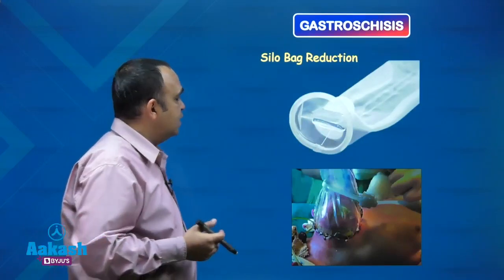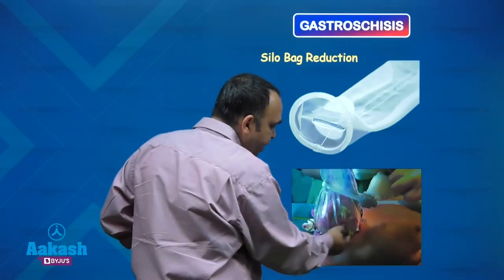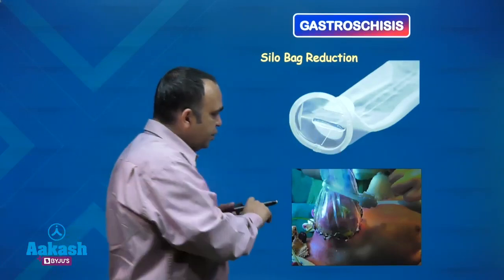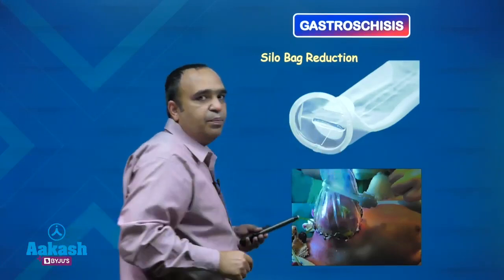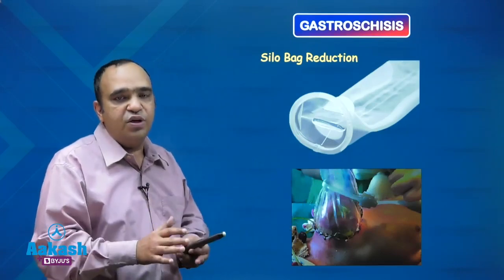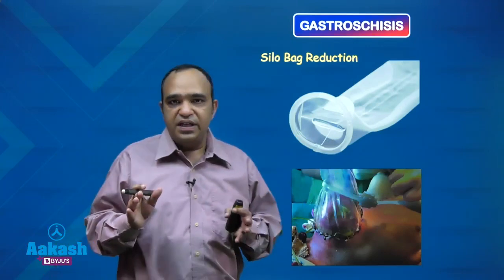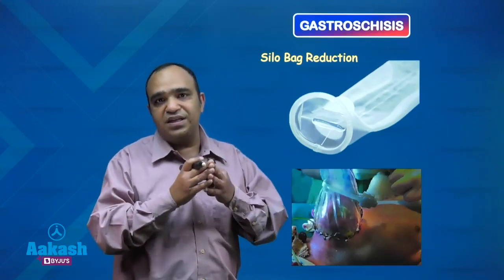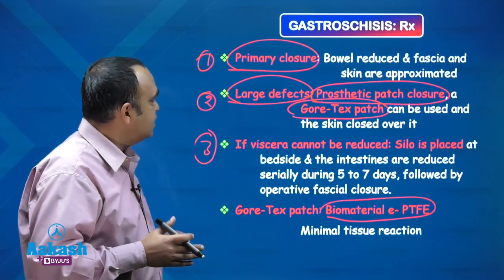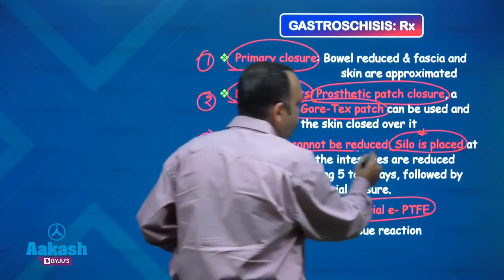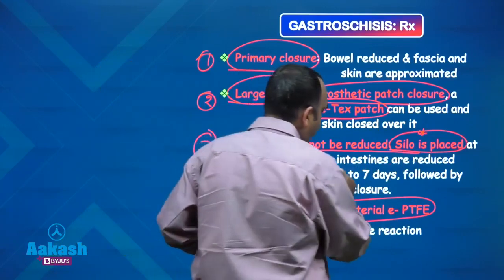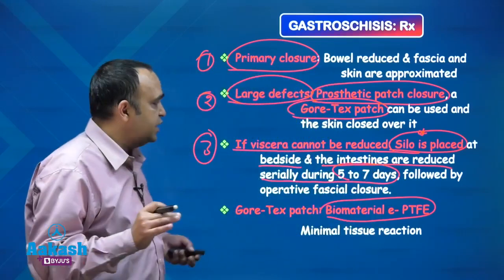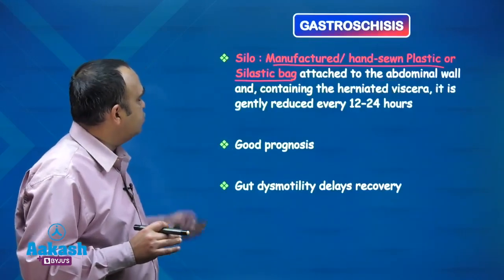Image-based questions can also be asked on this. In silo reduction, the entire bowel is covered with the silo bag and every 12 to 24 hours we keep tightening the bag, so the bowel gradually goes inside. Within 5 to 7 days we are mostly able to achieve complete reduction, after which we do a secondary abdominal wall closure. Intestines are reduced sequentially over 5 to 7 days followed by fascial closure.